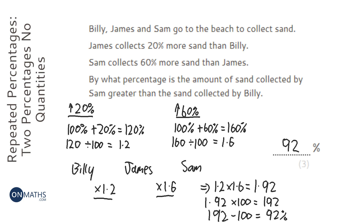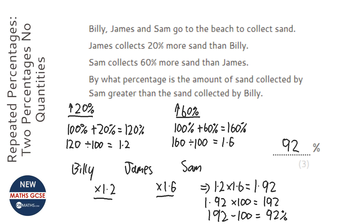It's because Billy has 20% more than James, so Billy has a bigger amount. When 60% is calculated to work out what Sam has, that's based on a bigger amount. So you'd expect it to be more than 80%. Through our working out, we've shown 92% is the correct answer.